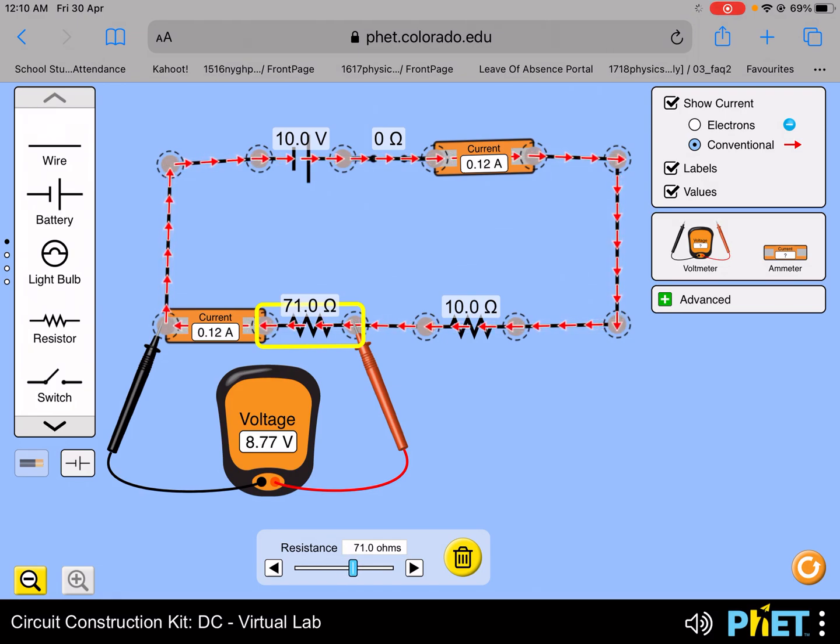As expected from theory, I'm going to increase the resistance. The current continues to decrease and the PD across this resistor continues to increase with its increase in resistance. Right now I have increased it to 100 ohms.